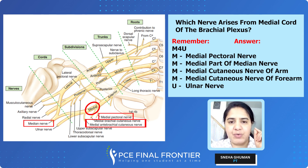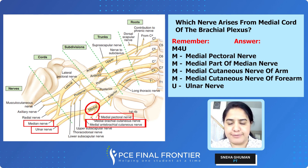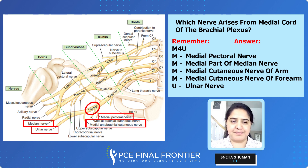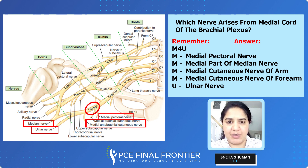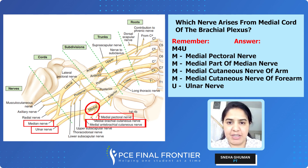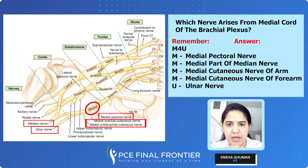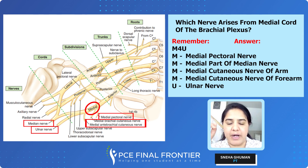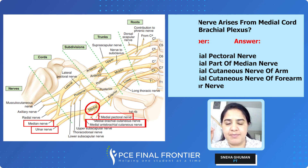For the next two M's, we write down medial cutaneous nerve of arm and medial cutaneous nerve of forearm. And the U is for the ulnar nerve. So the medial cord gives: medial pectoral nerve, medial part of median nerve, medial cutaneous nerve of arm, medial cutaneous nerve of forearm, and ulnar nerve.